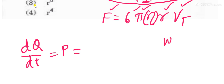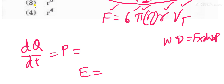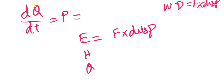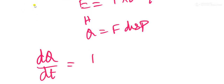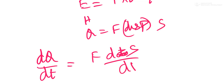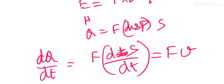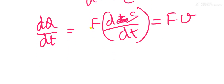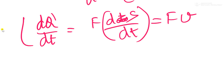We know work done equals force times displacement, so energy Q equals force times displacement. Differentiating this equation: dQ/dt = F · (dS/dt). The rate of change of displacement with time is velocity. So dQ/dt = force times velocity. Since the ball is at terminal velocity, this velocity is Vt.